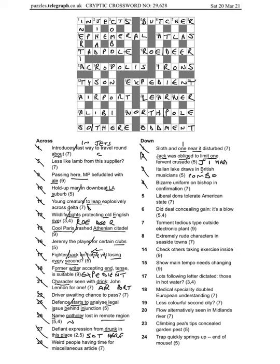4 down: bizarre uniform, U, and we know that bishop is often RR, and then confirmation. If you seal the deal you get confirmation, so bizarre is going to be SURREAL in this case. This is a pretty tough one here. Liberal L dons tolerate, so L for liberal. If you tolerate something you bear it, so if L dons bear, the word bear going around, and then American is US, gives us BELARUS for a state. 6 down: did deal concealing gain. If you did a deal you traded, and concealing gain, gain could be a win. It's a blow, well it's going to be a TRADE WIND.